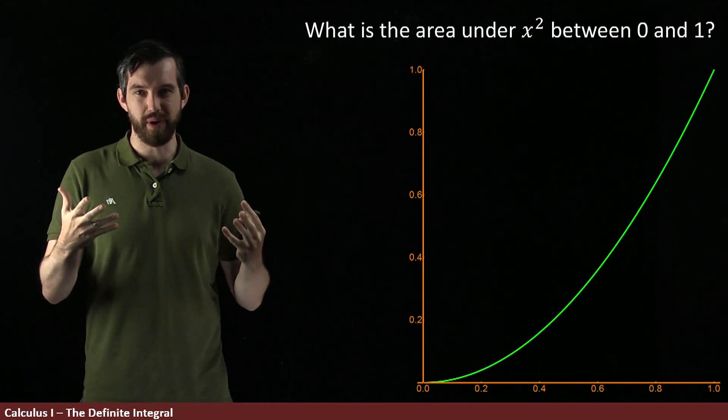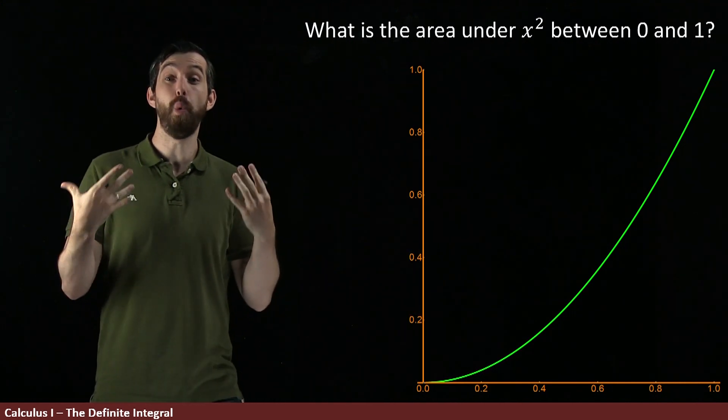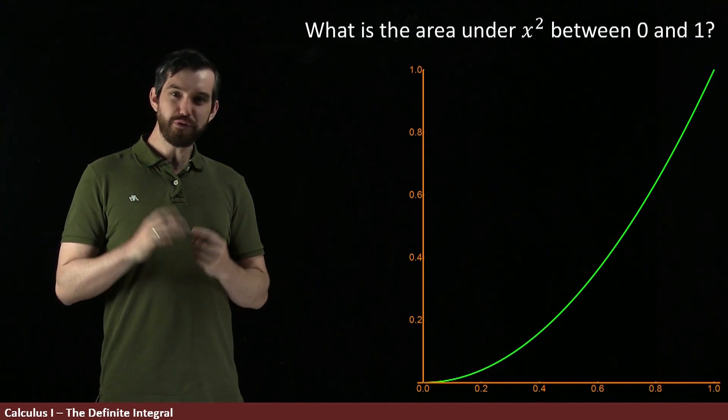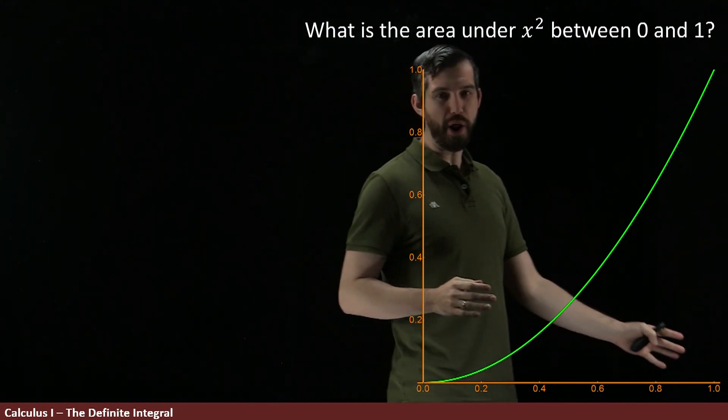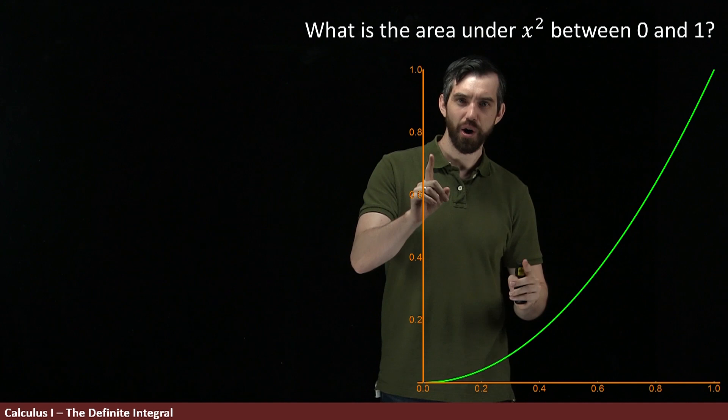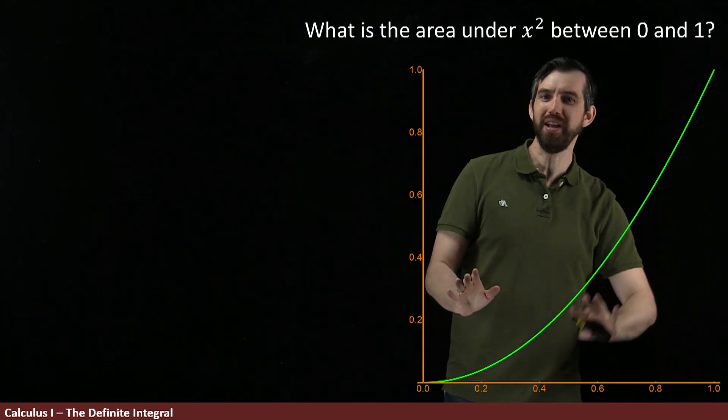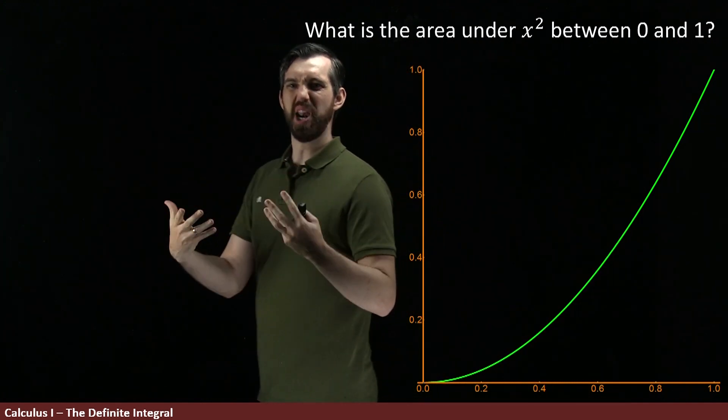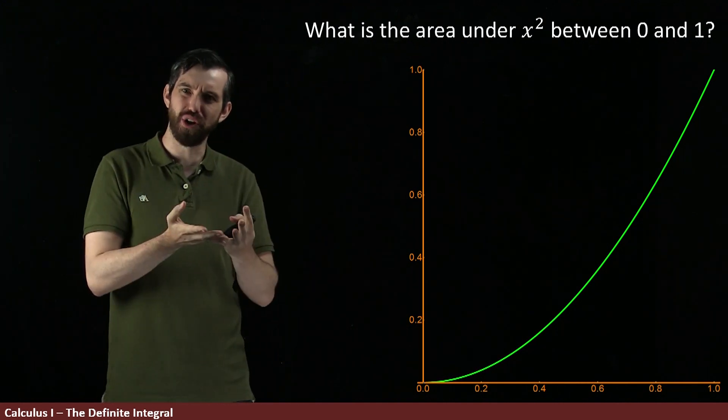So I want to begin with a very geometric question. We have some curve, this is the graph of y equal to x squared, and I've graphed it between 0 and 1 over here. And what I'm asking is what is this area under the curve?